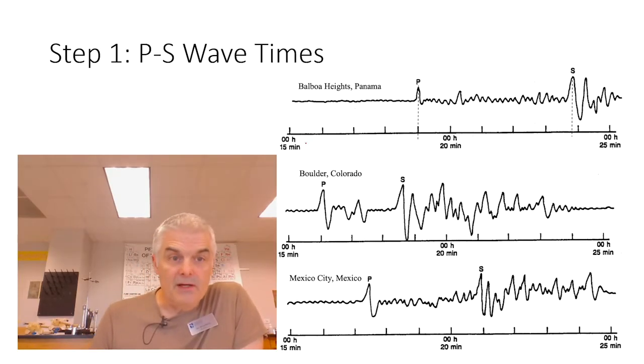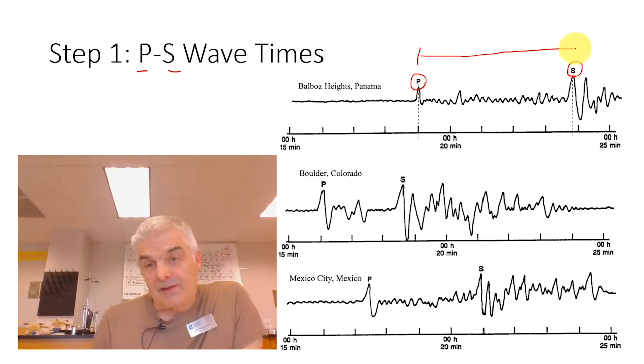Now, remember, if you recall, P waves travel fastest. S waves, so primary waves, secondary waves, second fastest. And you can measure on the seismometers when a P wave hits and then when an S wave happens. And because we know how fast they move, we can figure out the difference between when they land.